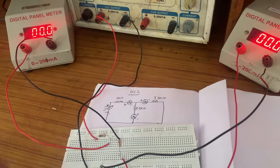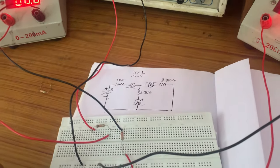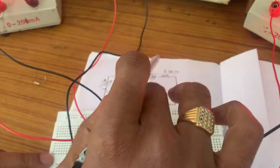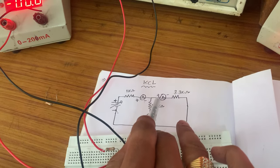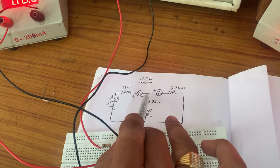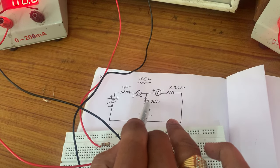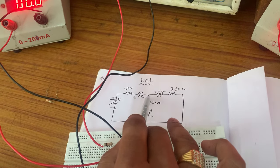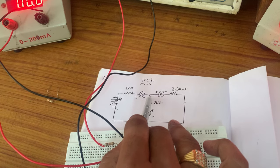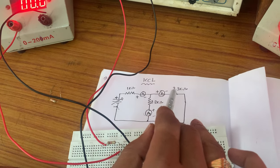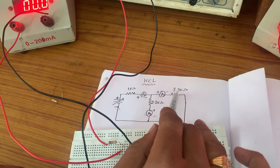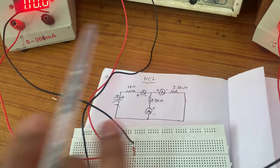Now, on the right side, Ammeter 3 positive is connected to the 2.2 kΩ first terminal, and the ammeter 3 negative is connected to the 3.3 kΩ first terminal.